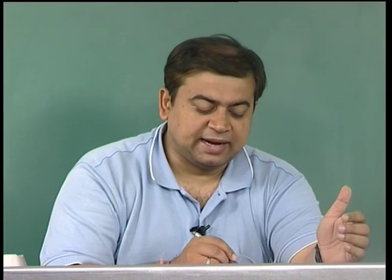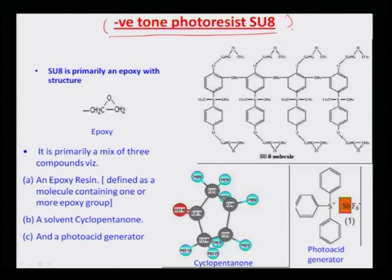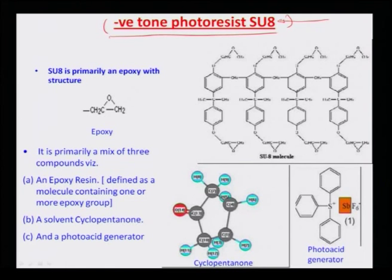Now let us understand what chemical changes result when you apply photoresist — why exposing the photoresist to light makes a chemical change happen on the resist surface. An example is the negative tone resist SU-8, available from a commercial manufacturer called Microchem. SU-8 is available at different viscosities — from 2005, 2010, 2025 — and as you go to higher grades the resist becomes thicker and more viscous, allowing thicker features to be realized.